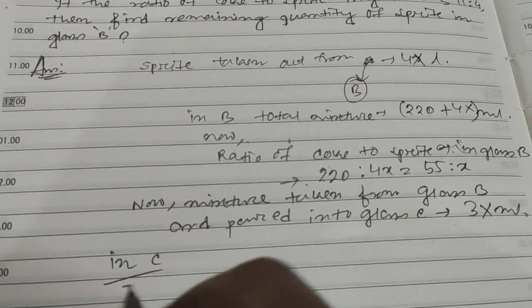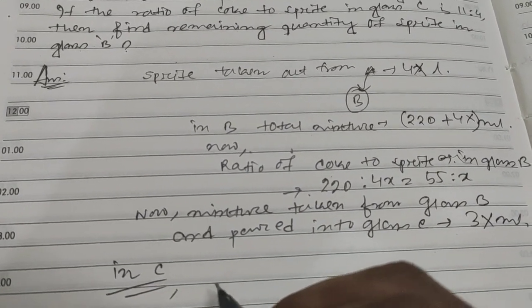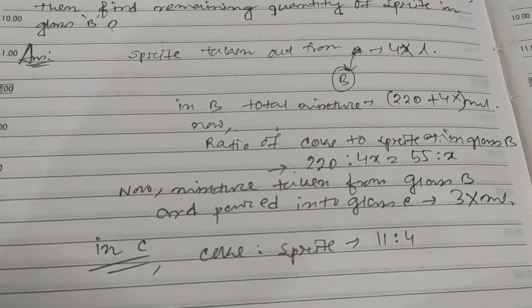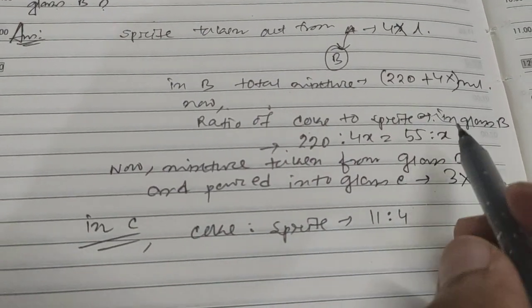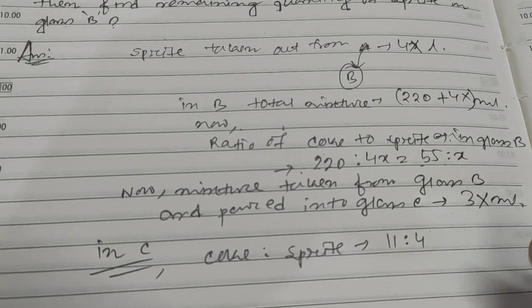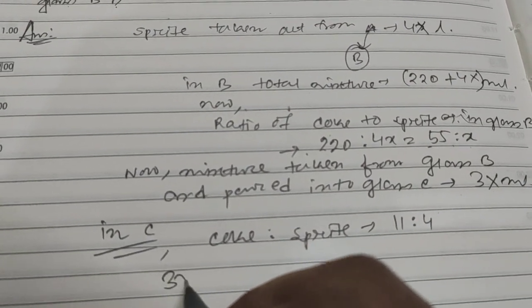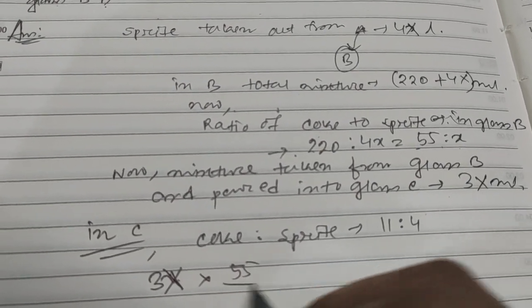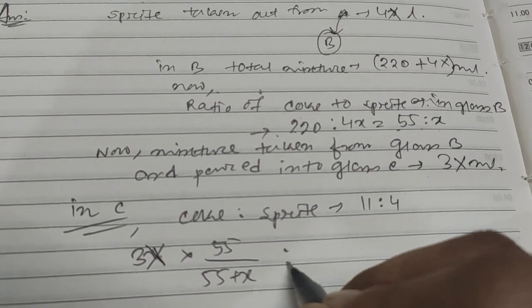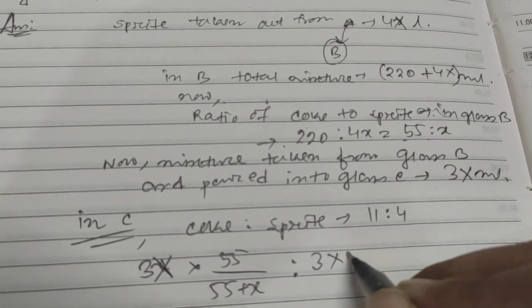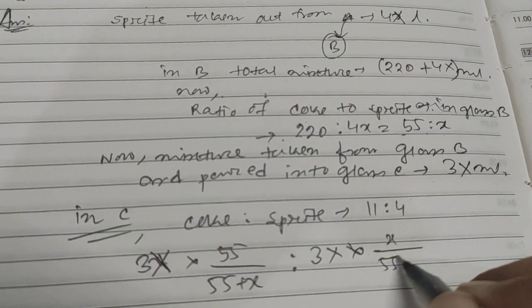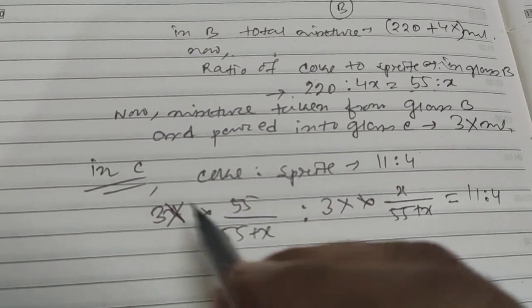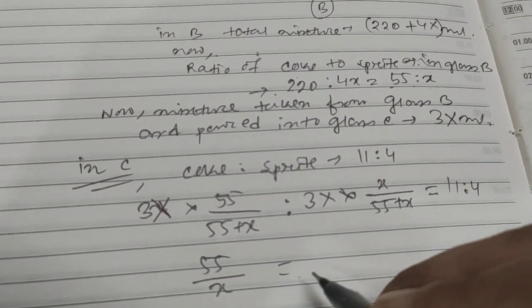In glass C, the coke and sprite ratio is 11:4. So here we have 55 and x, and 3x is taken out. So in this 3x, how much is coke? It's 55 by 55 plus x. This is nothing but 11:4, so everything cancels and only 55 divided by x remains.